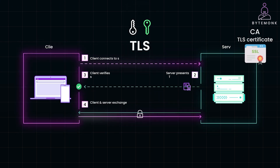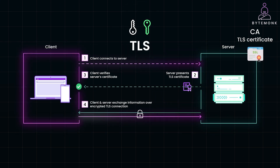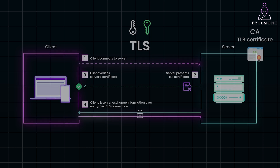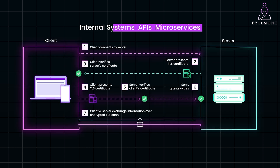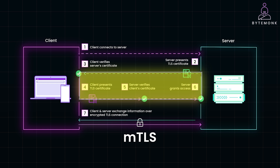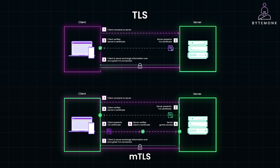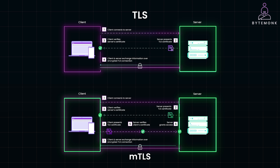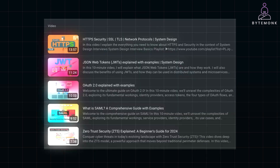To wrap it up: TLS is perfect for everyday use cases where securing communication and authenticating the server is enough, like on public websites — it provides solid security without the need for client authentication. However, when mutual authentication is required, such as in internal systems, APIs, or microservices, MTLS adds that extra layer of security. While MTLS does increase complexity due to certificate management, it's essential in environments that prioritize zero-trust and mutual authentication. Ultimately, both TLS and MTLS offer robust encryption, but MTLS is best suited for scenarios where both sides of the connection need to establish trust.